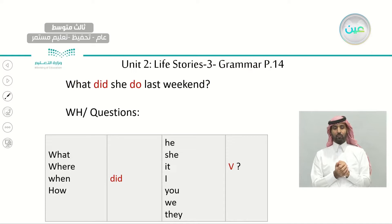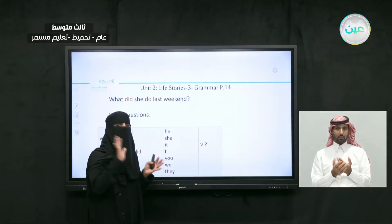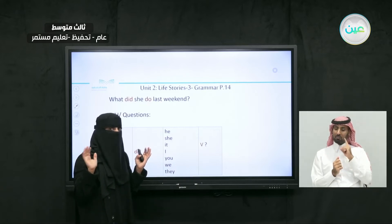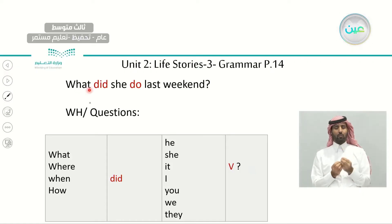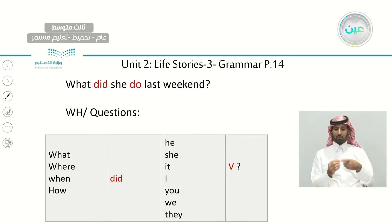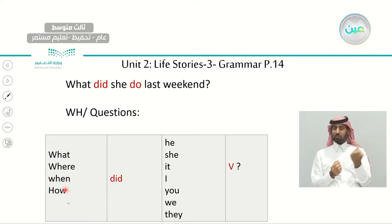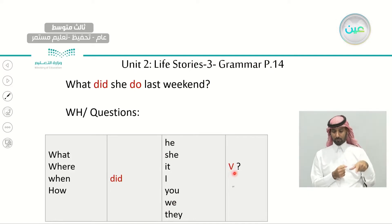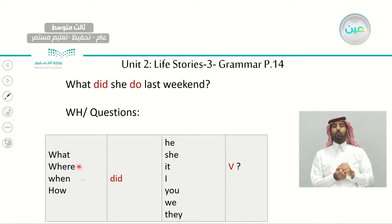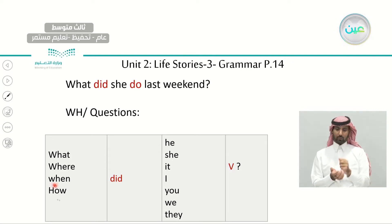How do we form questions? For WH questions — like what, where, when, how — we add 'did,' then the subject, then the verb in the infinitive form without anything added. For example: 'What did she do last weekend?' — we use 'do,' not 'did,' after the subject. 'Where did you go?' — not 'went,' but 'go.' 'How did you study?' — the verb stays in the infinitive form.